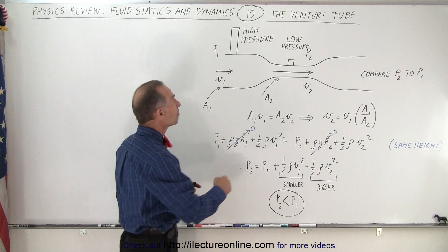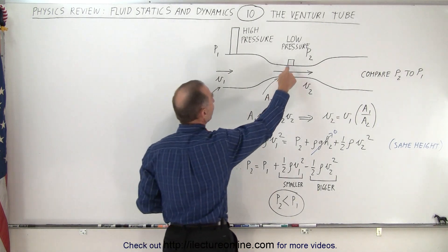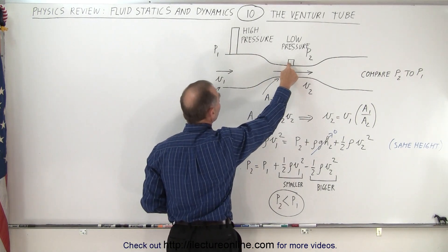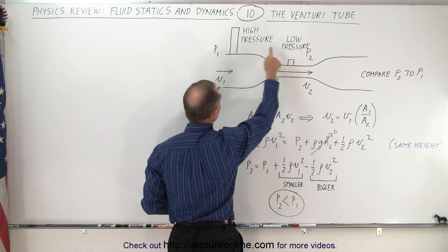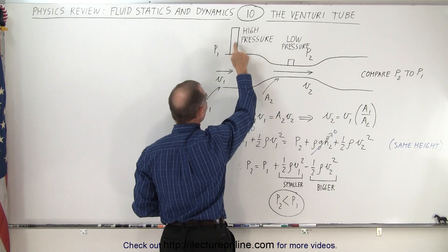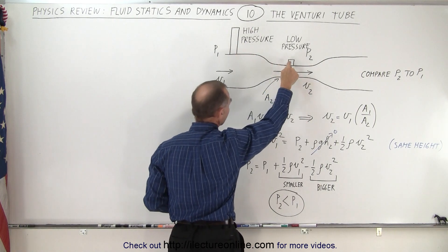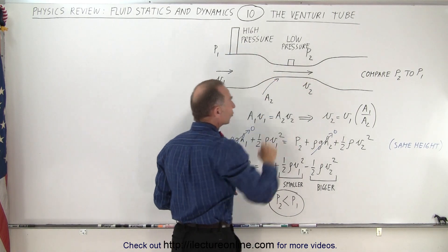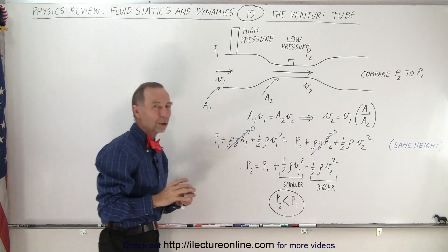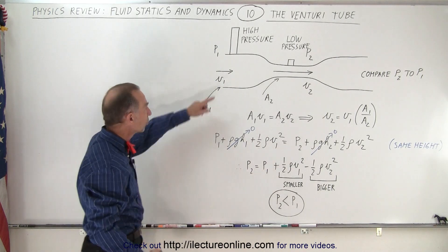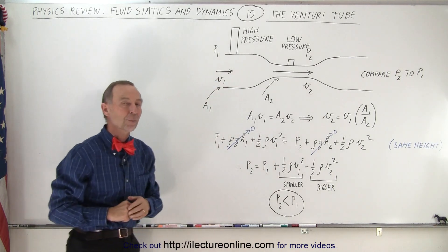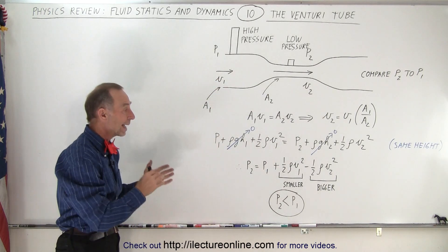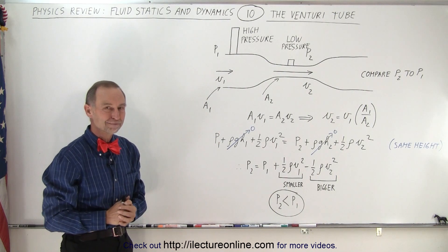If we measure the pressure at these two points, we can calculate the pressure at the other if we know one of them. Typically we measure the pressure at the narrow end of the tube to determine the pressure at the entry point of the tube, and that is how it's done.